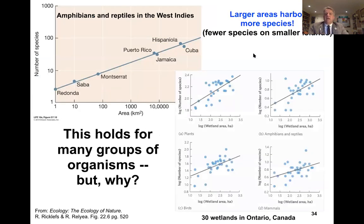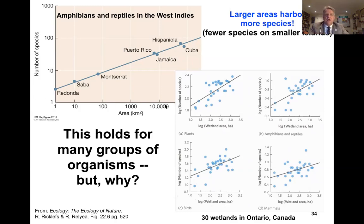There is a fundamental pattern that larger areas harbor more species, while there are fewer species on smaller islands. Looking at amphibians and reptiles in the West Indies — area in square kilometers on the x-axis, number of species on the y-axis — we can see that the larger islands, Hispaniola and Cuba, have far more species than the smaller islands. This holds for many groups of organisms, including plants, birds, mammals, and amphibians and reptiles in different wetland areas from Ontario — the larger the wetland area, the more species diversity we find.